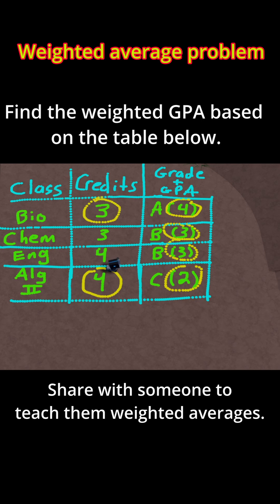Here's how you do a weighted average. You multiply each value, in this case the GPAs, by its weight, which is the credits. Then you add up all those weighted values and divide by the sum of the weights.